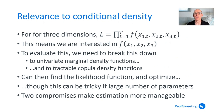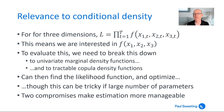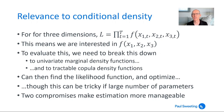So what's the relevance of this to conditional density? Say we're looking at three dimensions and we've got a likelihood function equal to the product over all time horizons of f(x1t, x2t, x3t). We're interested in f(x1t, x2t, x3t), but to evaluate this probability density function we've got to break it down into something we can actually work with — specifically into univariate marginal density functions and tractable copula density functions. We can then find the likelihood function and optimize. This can still be tricky with a large number of parameters, and there are a couple of compromises that can make estimation more manageable.